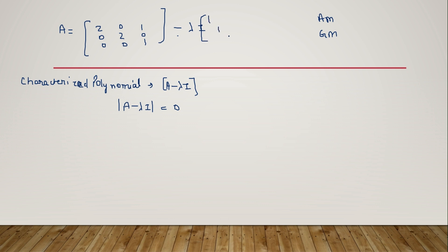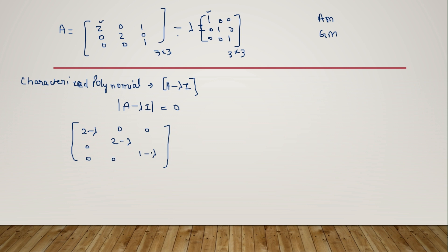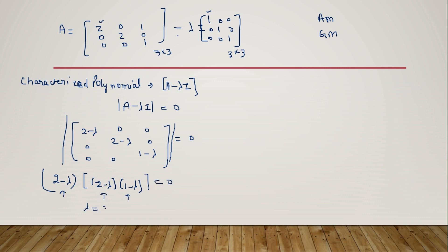Since our matrix is 3×3 order, the identity matrix I will also be of 3×3 order. So A minus lambda I gives diagonal entries: two minus lambda, two minus lambda, and one minus lambda — all other elements remain the same since the identity matrix has zeros elsewhere. Setting the determinant equal to zero, we get eigenvalues: lambda equals two, lambda equals two, and lambda equals one.